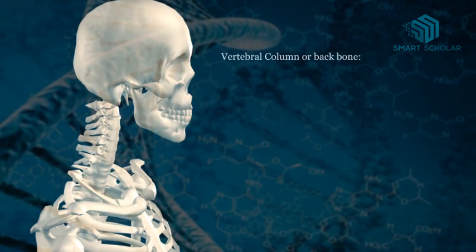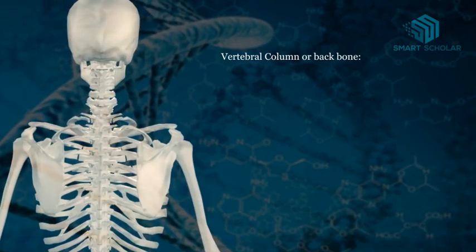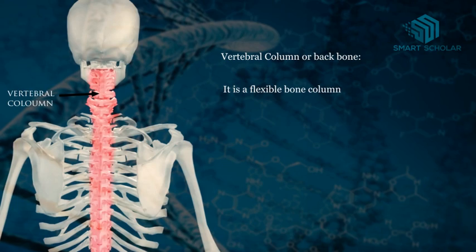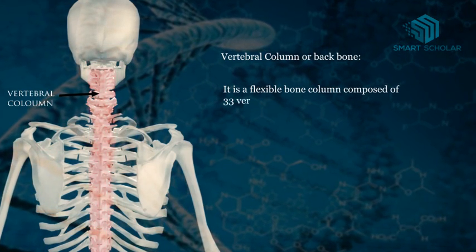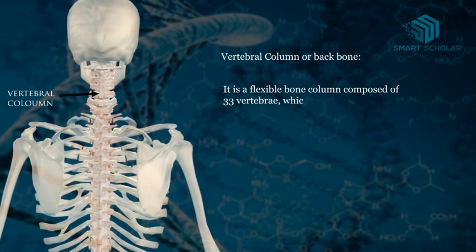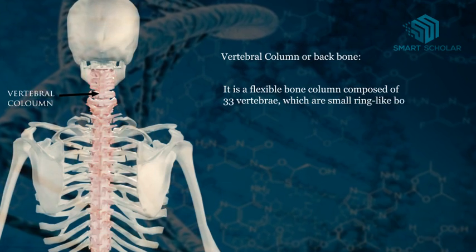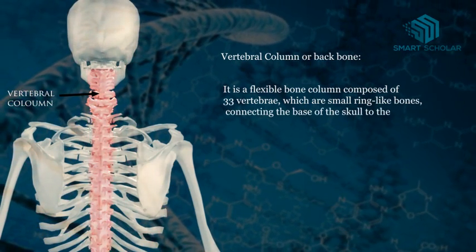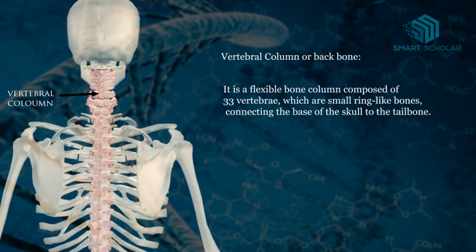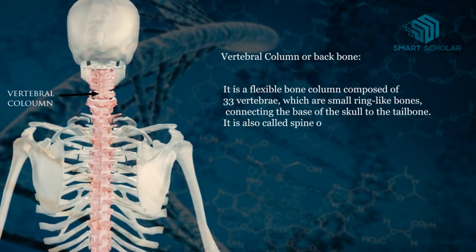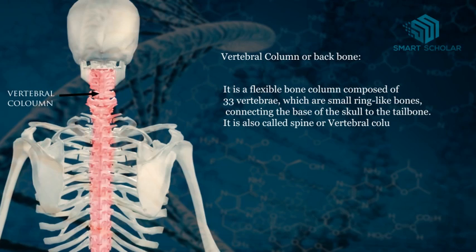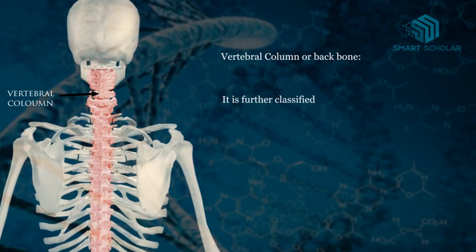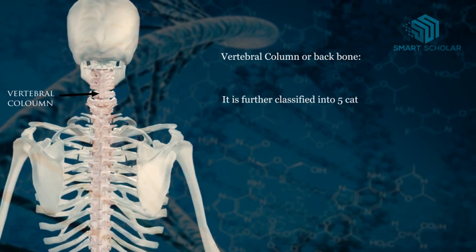Vertebral column or backbone. It is a flexible bone column composed of 33 vertebrae, which are small ring-like bones connecting the base of the skull to the tailbone. It is also called the spine or vertebral column. It is further classified into five categories.